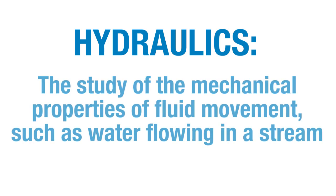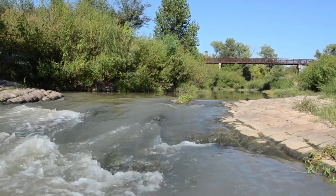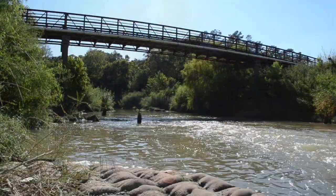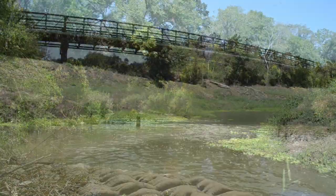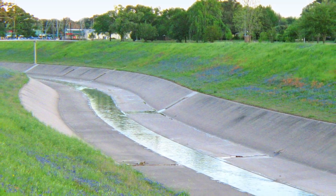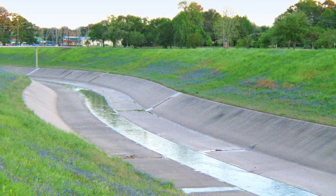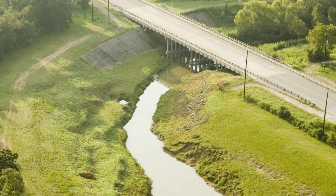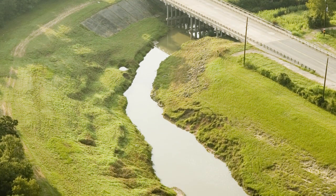Hydraulics is defined as the study of the mechanical properties of fluid movement, such as water flowing in a stream. This is important because runoff from the water cycle is affected by the surfaces over which it flows. As an example, the ground surface affects the speed, direction, and depth of water as it flows back to rivers and streams. Man's alterations of the earth's surface cause water to behave differently than it would over a natural surface, sometimes speeding up the flow or slowing it down or altering the direction and depth of the flow.